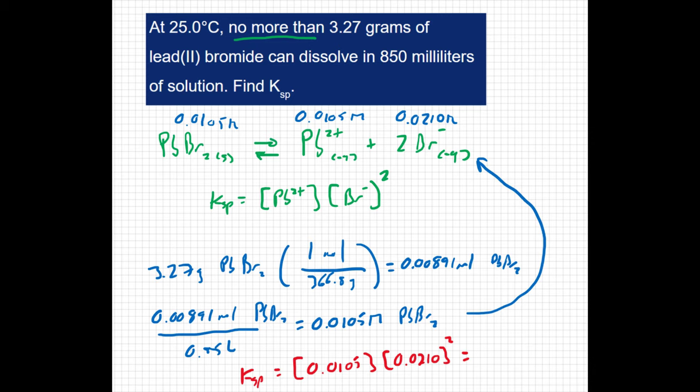If I do this all out, I can get 0.0105 times 0.021 squared, and I get a Ksp value of 4.63 times 10 to the negative 6.